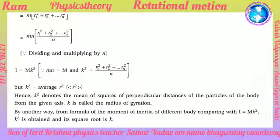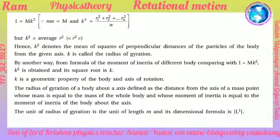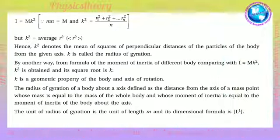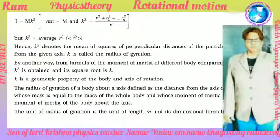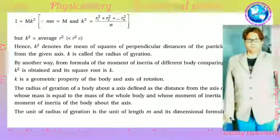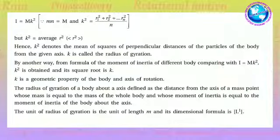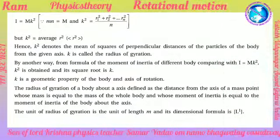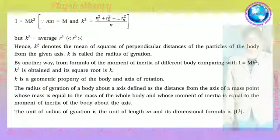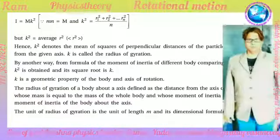K^2 denotes the mean of squares of perpendicular distances of particles of a body from the given axis. K is called the radius of gyration. From the formula I = MK^2, K^2 is obtained and its square root is K. K is a geometric property of the body and axis of rotation. The definition: radius of gyration is the distance from the axis of a mass point whose mass equals the total mass and whose moment of inertia equals that of the body about the axis. Unit of radius of gyration is meter (m), dimension formula L¹.